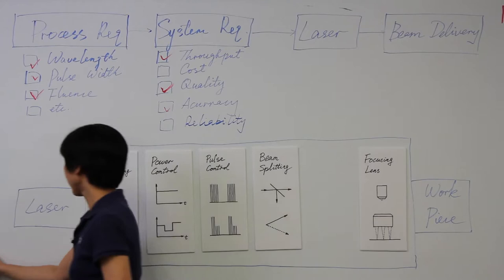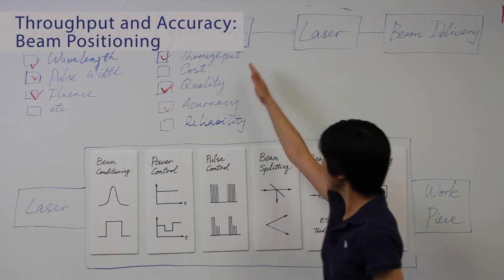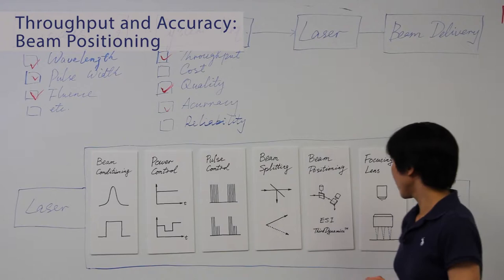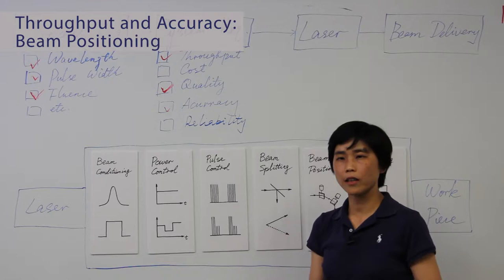Another key area for the system is beam positioning. It adds more control to the throughput and accuracy. Often used beam positioning systems include XYZ stage and also Galvo scanner system. It utilizes the Galvo mirror and the scan lens to create much faster scan on the work surface.